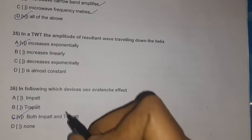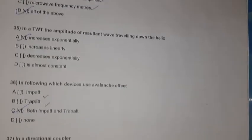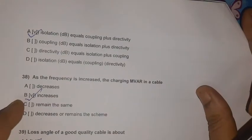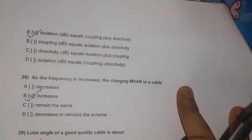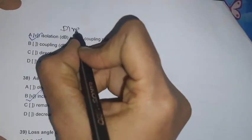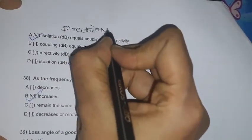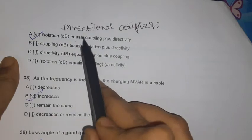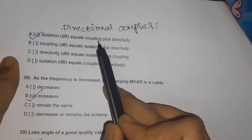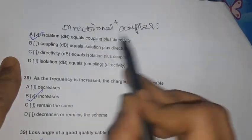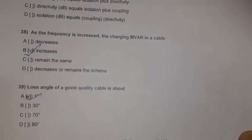Question 36: Both IMPATT and REPATT diodes use the avalanche effect. Question 37: In a directional coupler, isolation (dB) = coupling + directivity.